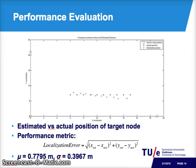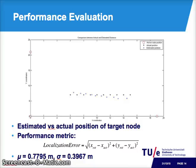Here we have plotted the estimated and actual position of the target node. To evaluate performance, we defined the localization error metric as the Euclidean distance between the estimated and actual position of the target. For the experiments we performed, the localization error has a mean of approximately 0.8 meters and a standard deviation of approximately 0.4 meters. This is good performance for an indoor environment.